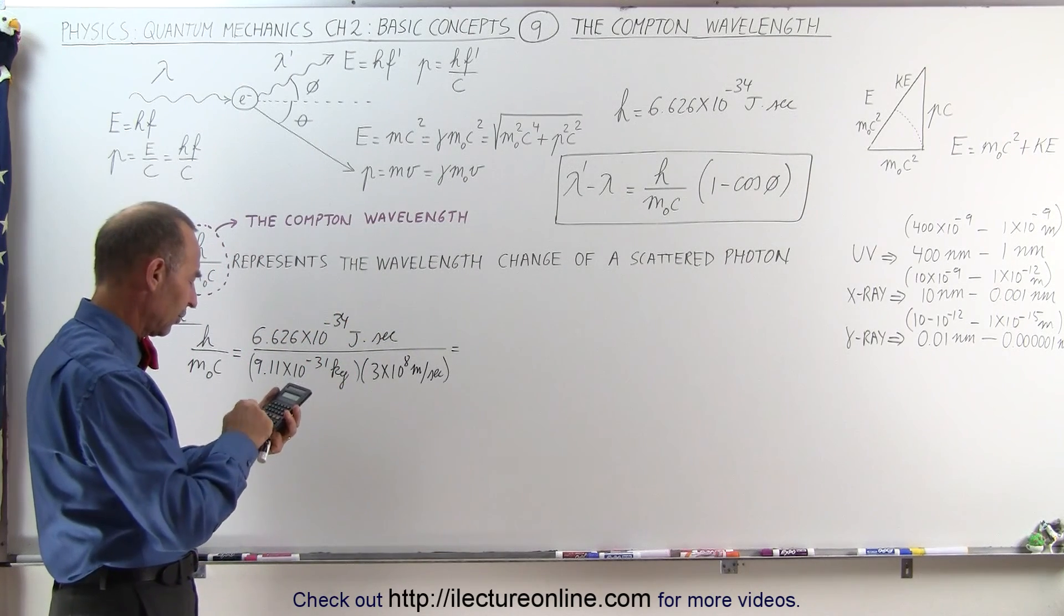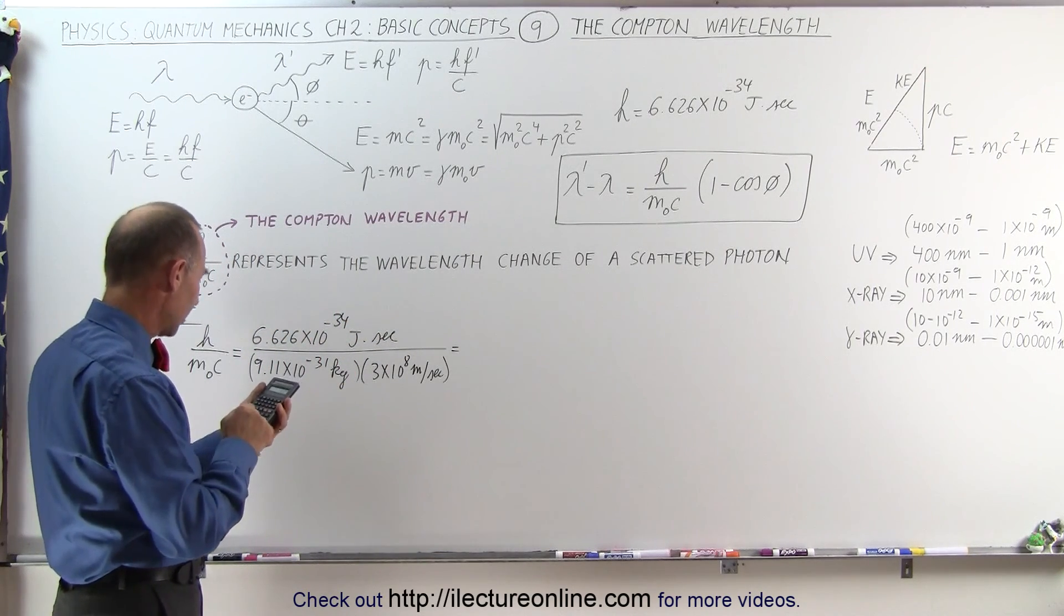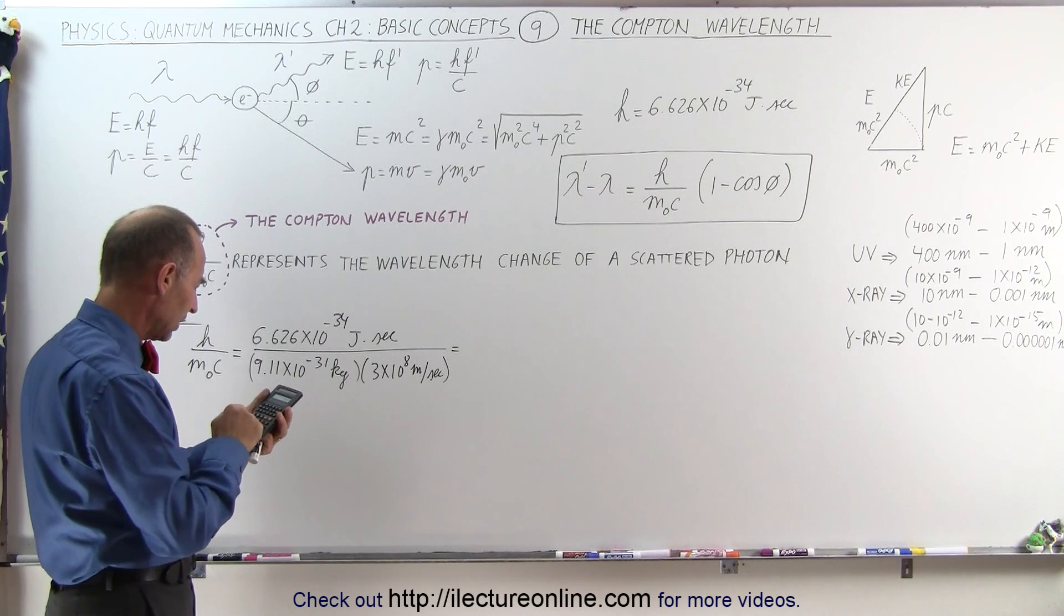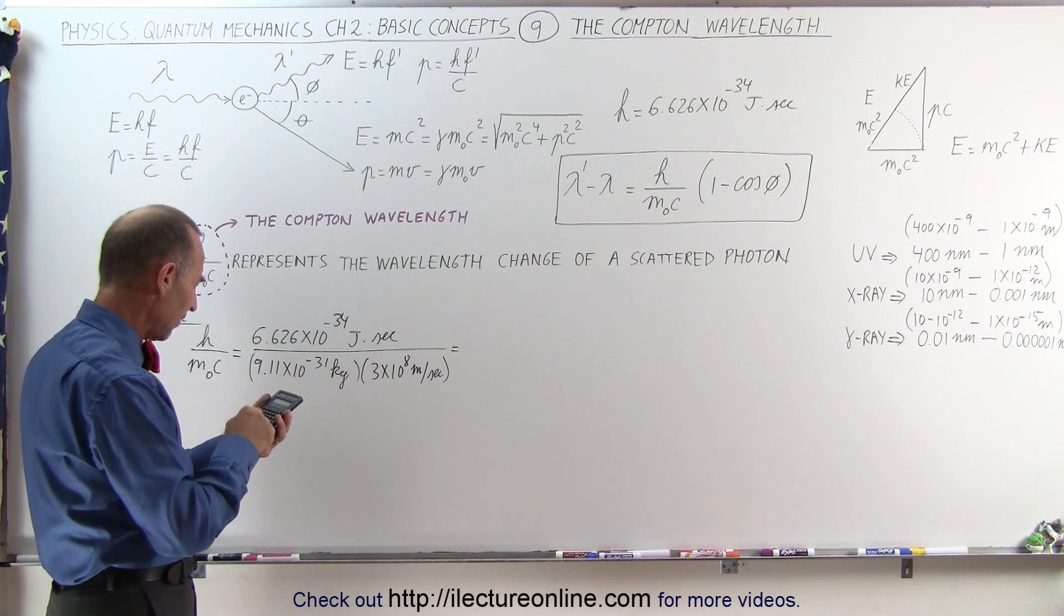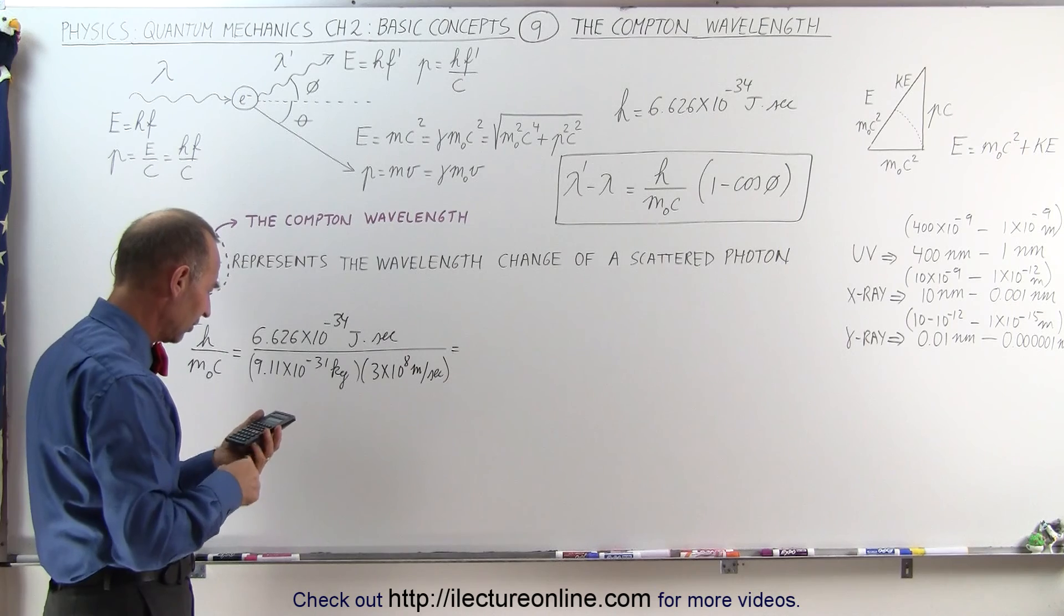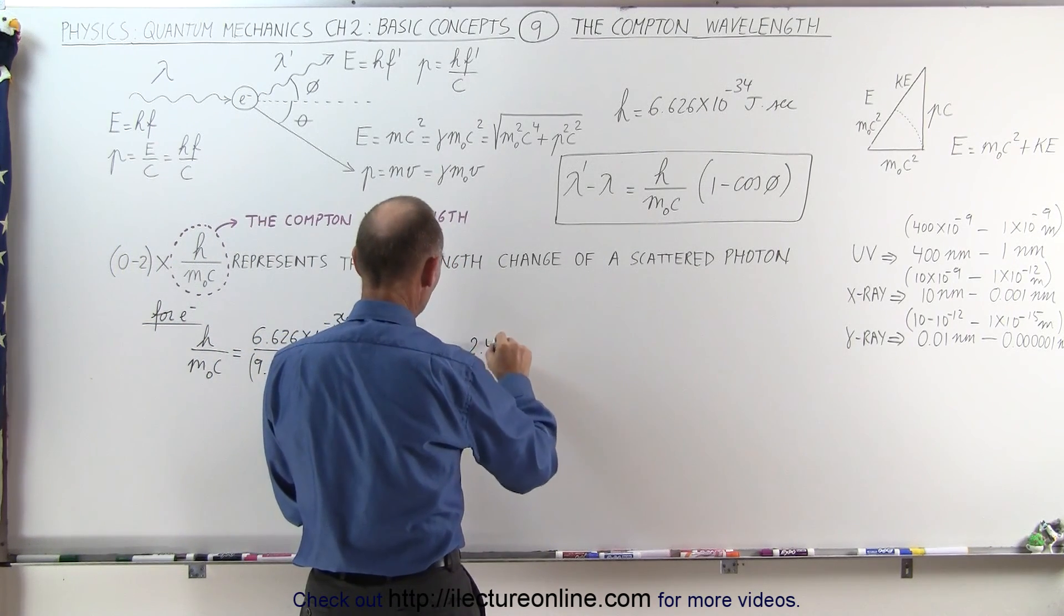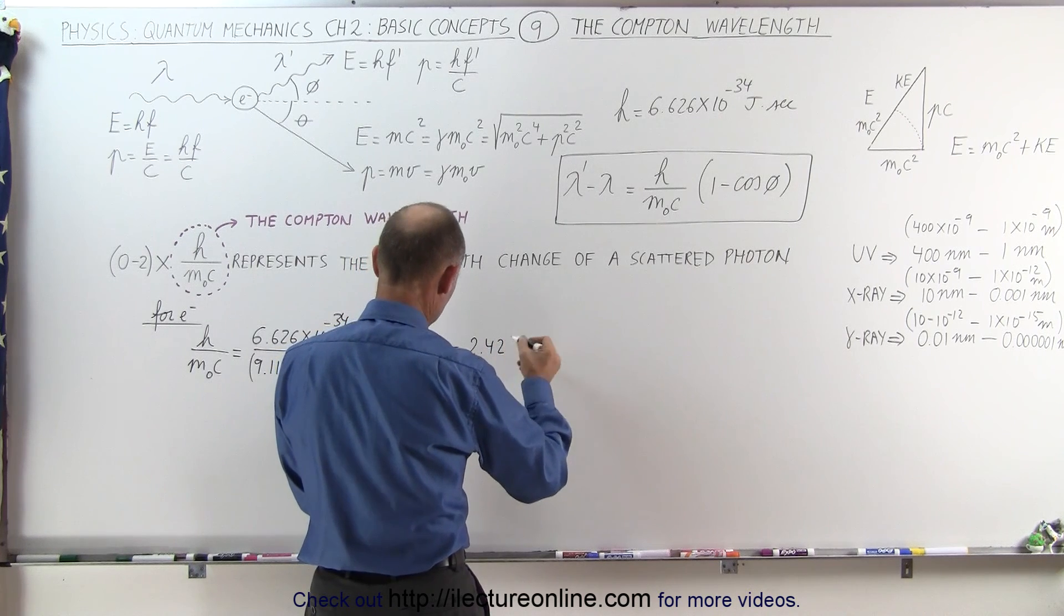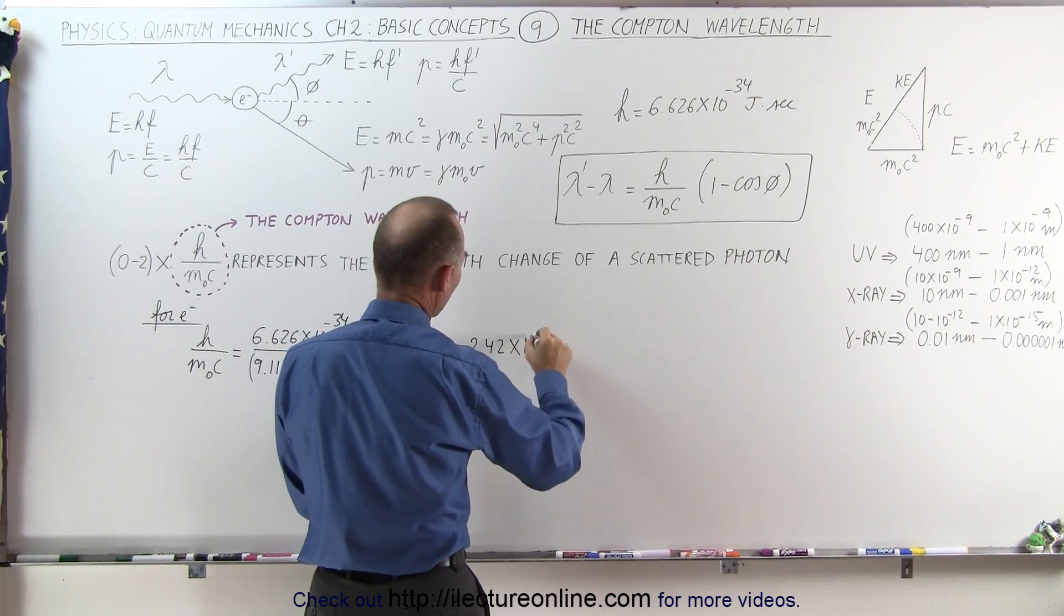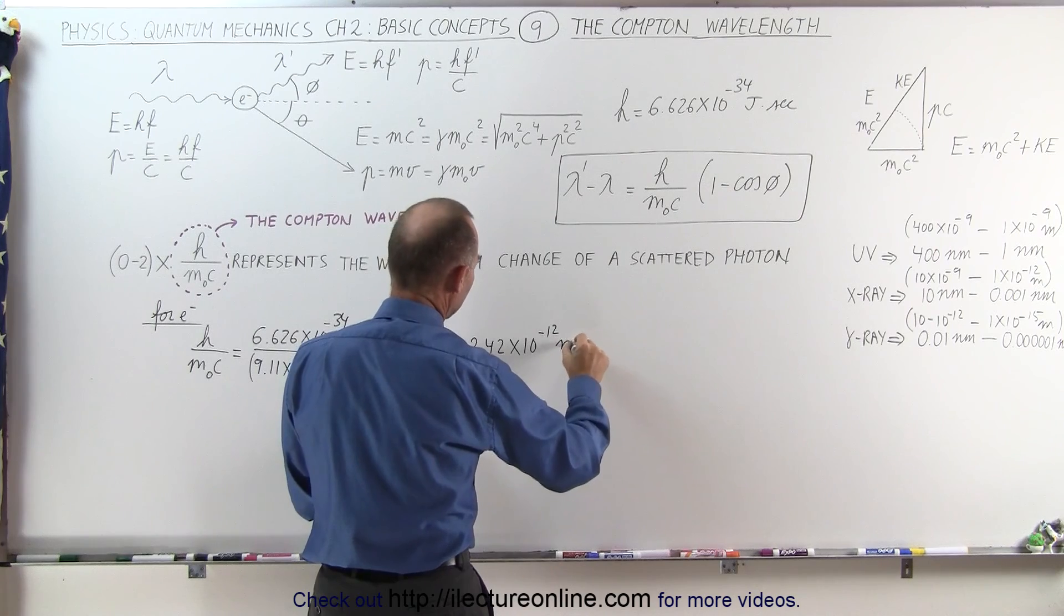6.626 e to the minus 34, divided by 9.11 e to the minus 31, and divided by 3 e to the 8 equals. And notice we're dealing with a change in the wavelength of 2.42 times 10 to the minus 12, and that will be in meters.